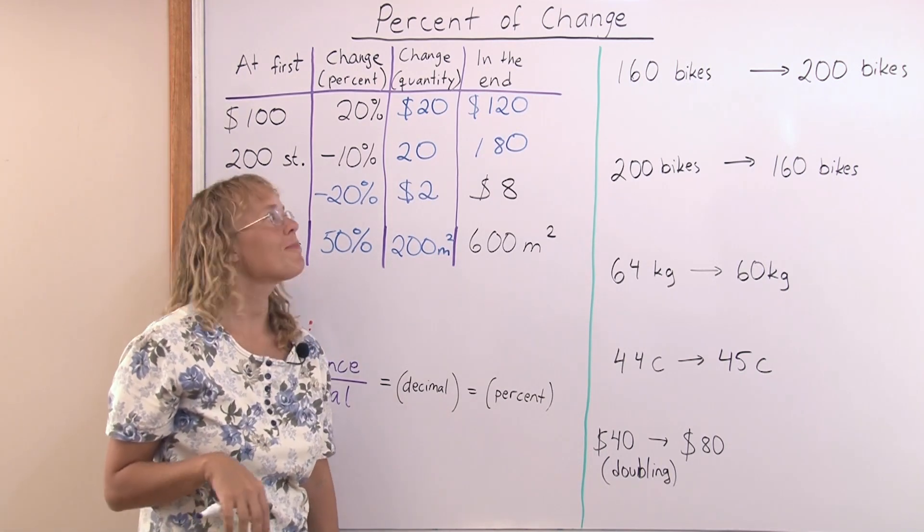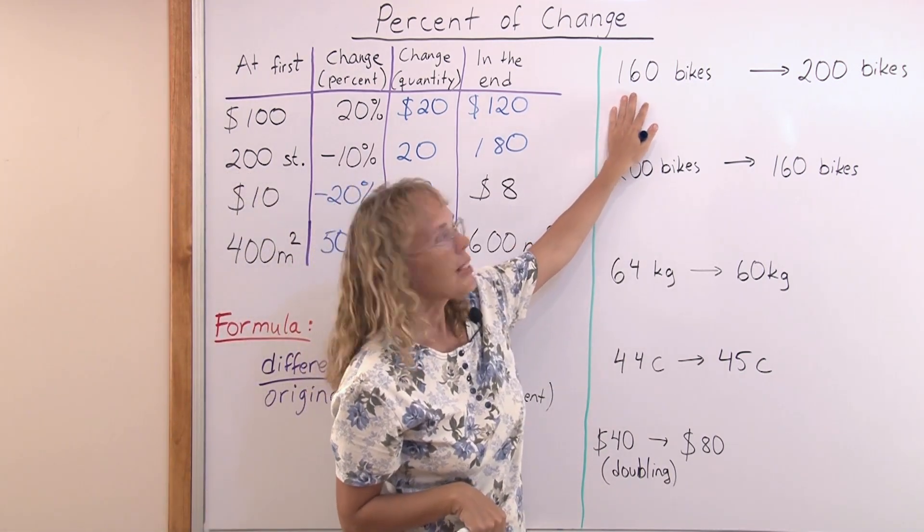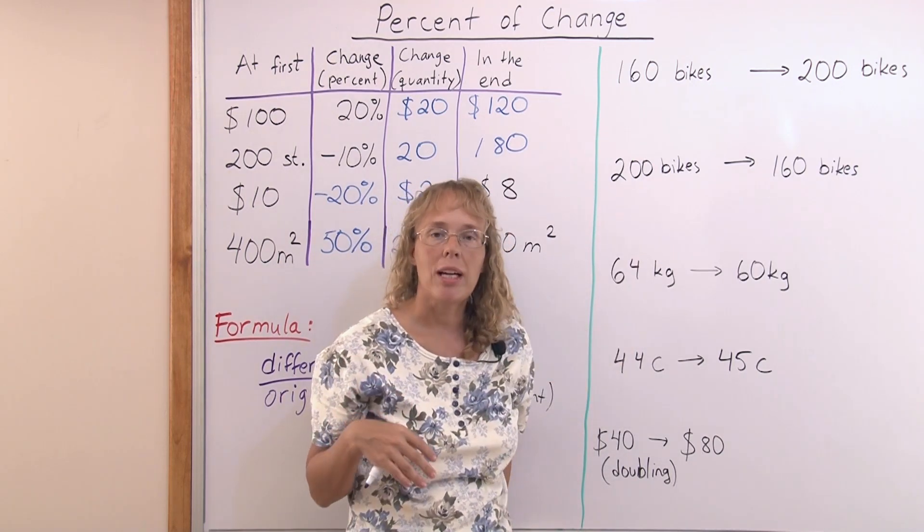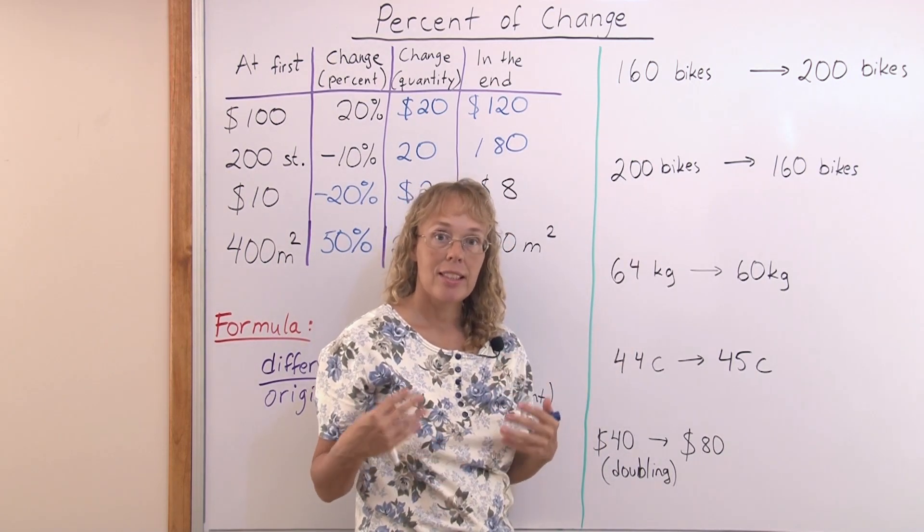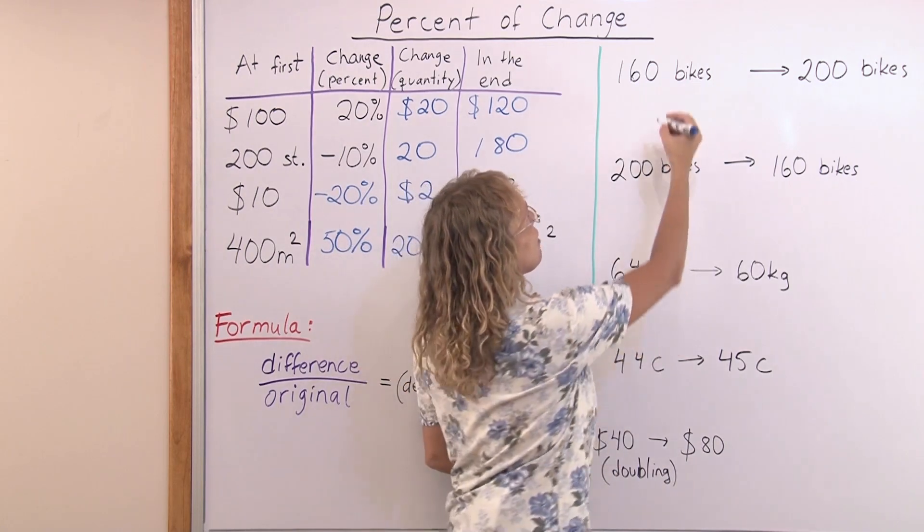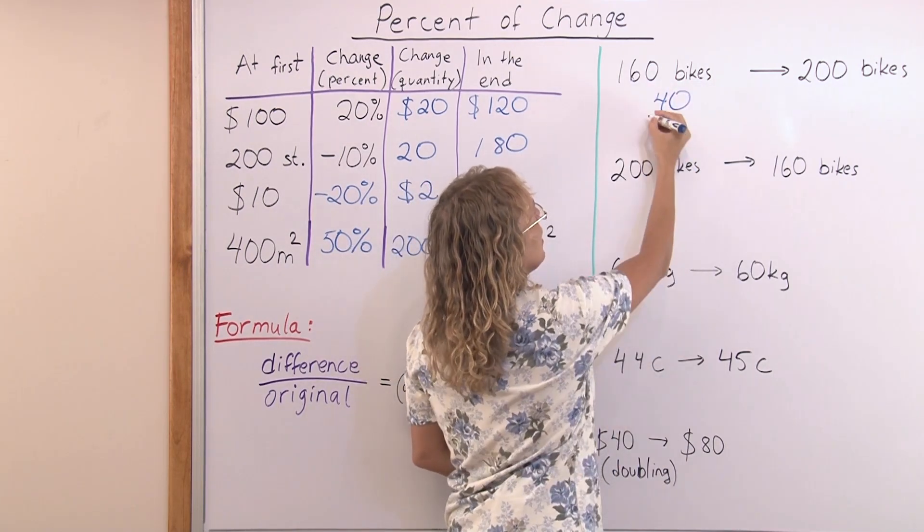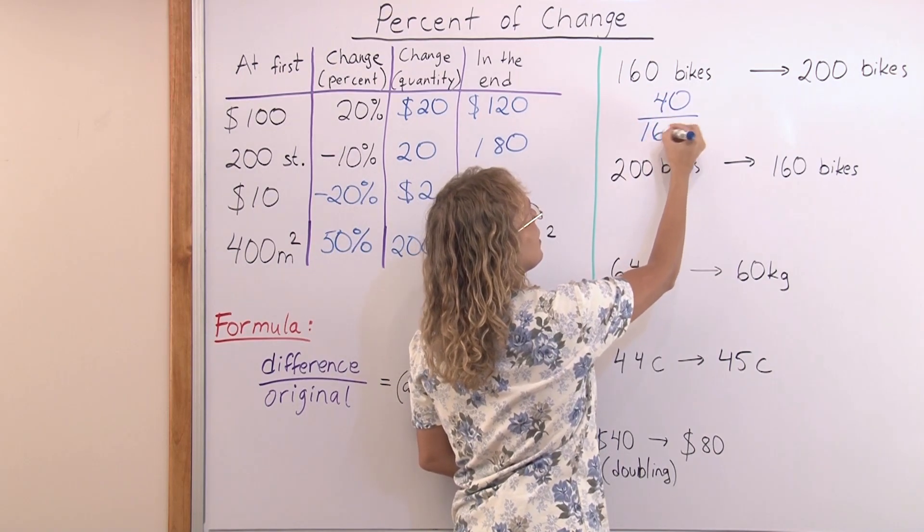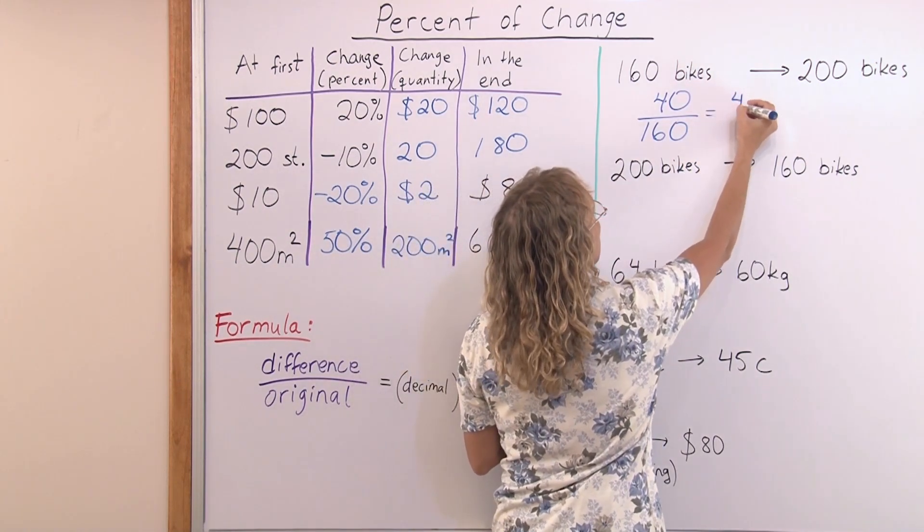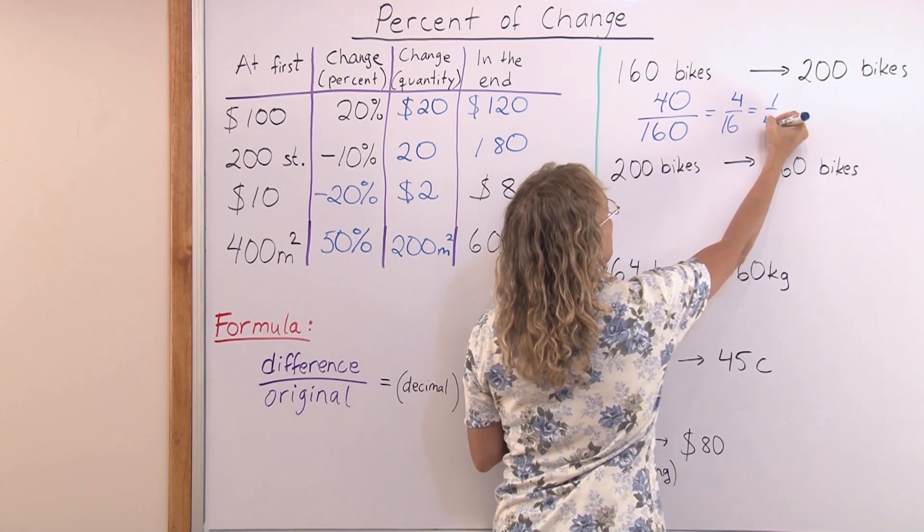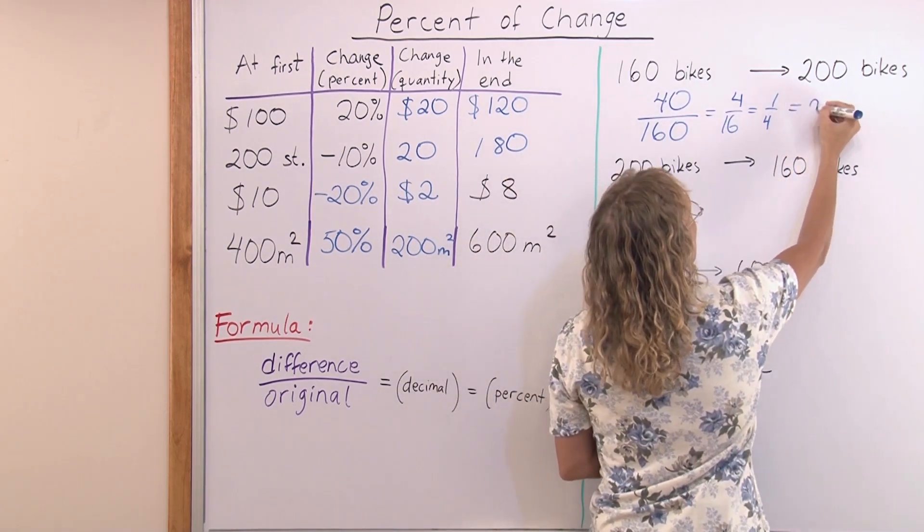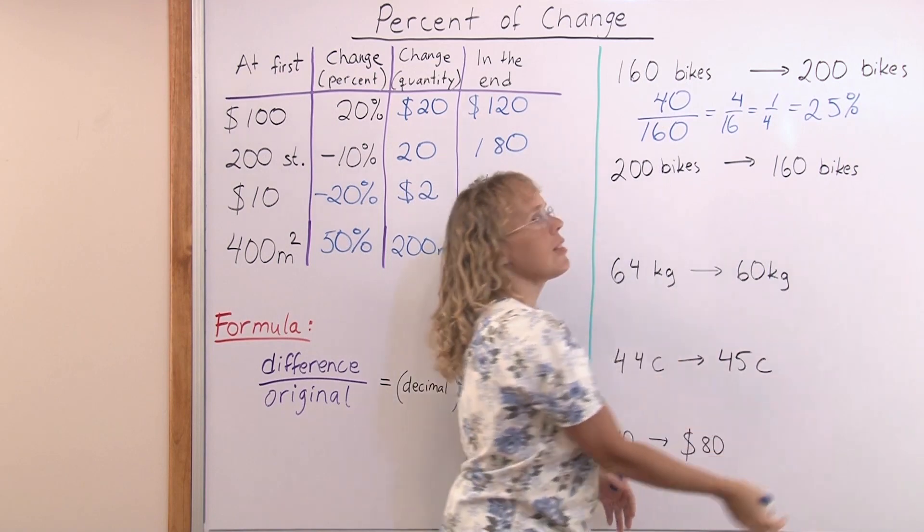Let's look at some examples now. Let's say that these are sales numbers. One month a store sold 160 bikes and the next month they sold 200 bikes. How many percent did the sales increase? We look at the difference in the quantities by how many bikes it increased. The increase is 40 bikes. And then we divide it by the original, which is this one, 160. Now here's our fraction. I will now simplify it. It simplifies to 4 over 16 and then to 1 fourth. And I happen to know that 1 fourth as a percent is 25 percent. So the sales increased by 25 percent.